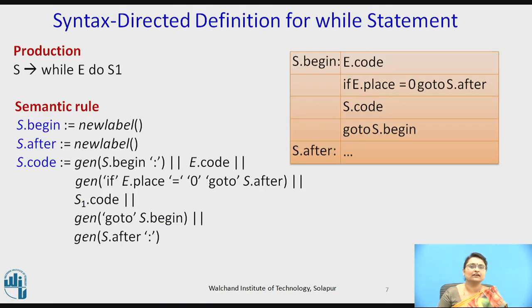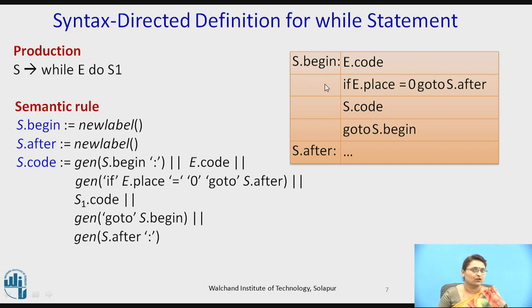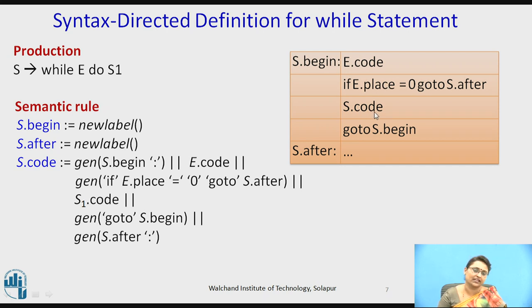Now consider the syntax-directed definition for a while statement. The production is: S producing while e do S1. The three-address code first generates e's code, then checks the condition. If e's place equals zero (false), control goes to S.after, exiting the loop. Otherwise, S1's code is executed, followed by a goto back to S.begin, repeating the loop.